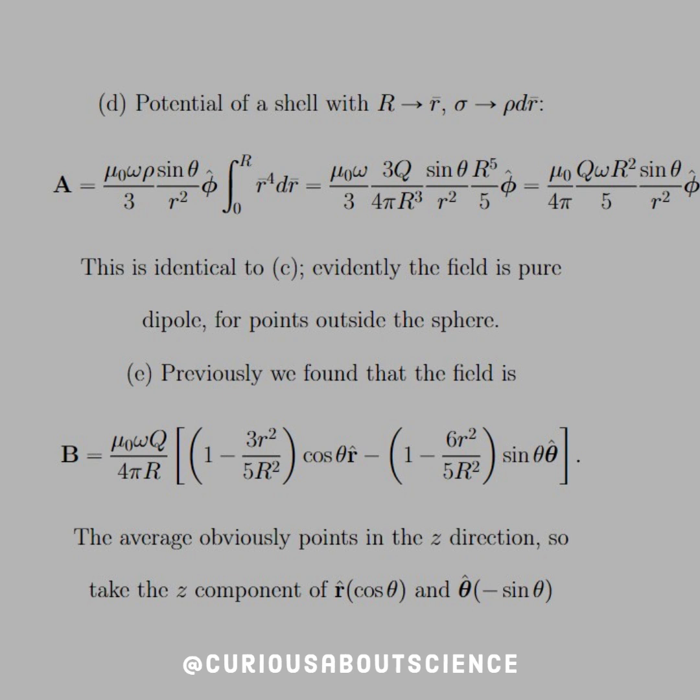Part E. Previously, we found that the magnetic field of these dipoles was written as such. You've seen this in the text or in other problems, so I'm not going to read it off. But the average obviously points in the Z direction because of cancellations of symmetry. So we need to take the Z component of r hat, which is cosine, and the Z component of theta hat, which is negative sine. Remember, these unit vectors are messy.